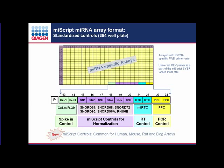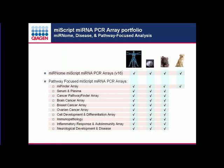There is a broad portfolio of miScript microRNA PCR arrays: for complete microRNA profiling, there are microRNAome PCR arrays. For disease- or pathway-focused analysis, there are arrays for cancer, serum and plasma, immune system, neurological development and disease, and a miRFinder array containing the most commonly expressed microRNAs. All these are available for human, mouse, and rat model systems.